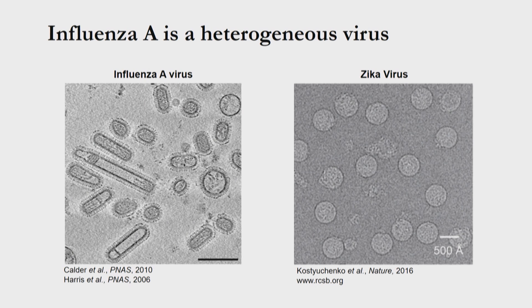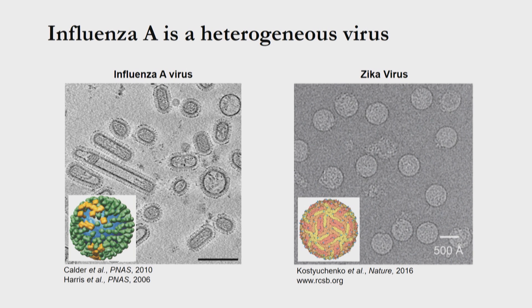Influenza virus certainly isn't unique in this form of pleomorphism, but it nonetheless stands in contrast to many other enveloped viruses. As one example, I'll highlight a flavivirus, Zika, which you can see from this electron micrograph is quite uniform in its size and shape. The contrast between these two viruses extends beyond morphology to also encompass the distribution of proteins on the surface of the virus. In this EM reconstruction of influenza, hemagglutinin is highlighted in green and neuraminidase is highlighted in gold, and there's no strong order in the distribution of these two major membrane proteins — in contrast to the highly regular organization of Zika envelope proteins.